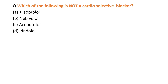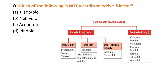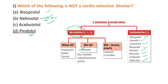The next question: which of the following is not a cardioselective beta blocker? The cardioselective beta blockers include metoprolol, atenolol, acebutolol, bisoprolol, esmolol, betaxolol, celiprolol, and nebivolol. However, pindolol is a non-selective beta blocker. So the answer is pindolol. A special point about nebivolol is that it also causes nitric oxide release.